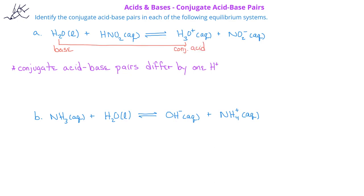Now let's look at the other two species in this equilibrium system. We have nitrous acid on the reactant side and the nitrite ion on the product side. Again, these two structures differ by one hydrogen ion. Therefore, the nitrous acid and the nitrite are also a conjugate acid-base pair.